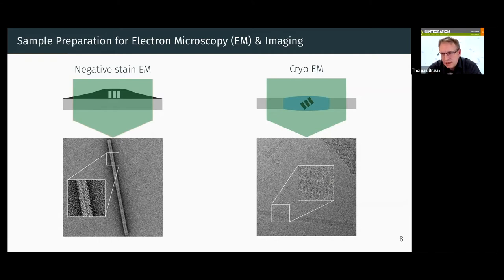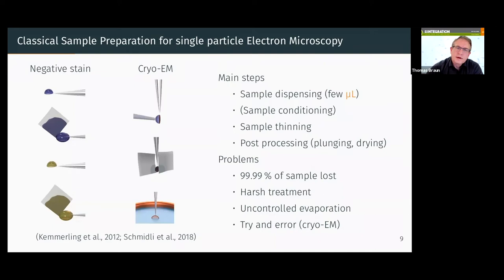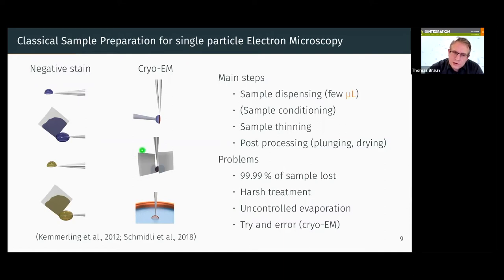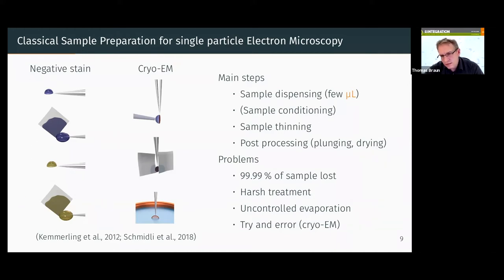Negative stain EM has an important spot in research because of its high signal-to-noise ratio. The problem with the classical preparation method is it's not lossless. You start with around three microliters of sample, and in both cases you have a very hefty paper-blotting step. You remove immediately around 99.99% of your sample. In negative stain, you blot away the sample, incubate with heavy metal salt, blot again, and do air drying — then go directly to the microscope.